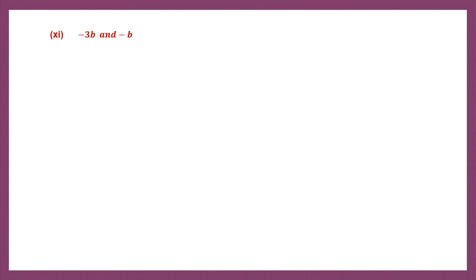Question 11: minus 3b and minus b — both are like terms. I'll make this 1b. So now let's do it: minus 3 minus 1b. Signs are the same, we can put the same sign and add. 3 plus 1 is 4, so minus 4b.